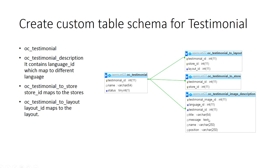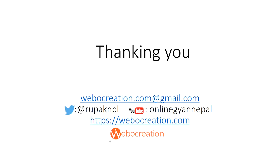But for our case, each language has its own image, and title, message, name, and position are all language-specific, so we keep those in the description table. For multi-store we create a store joining table, and for multi-layout we create a layout joining table. This is how we create tables in OpenCart.